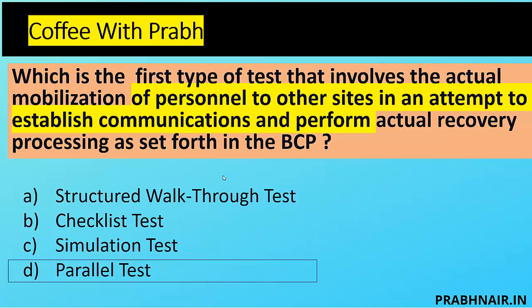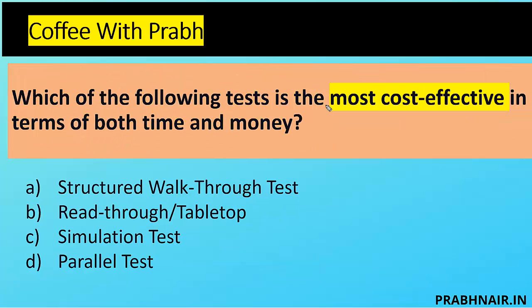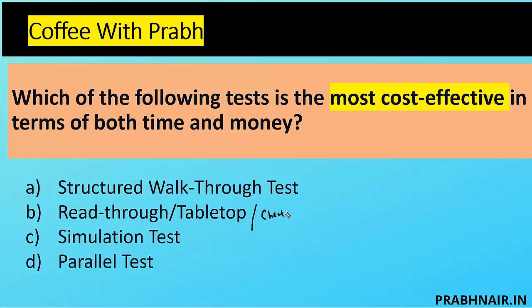Which of the following tests is most cost-effective in terms of both time and money? Parallel and simulation are removed. The read-through is cost-effective because it is just a discussion checking whether the list is updated. The read-through or tabletop is also called a checklist test — so the answer is B, checklist test. Don't get confused: read-through, tabletop, and checklist test are all the same thing.